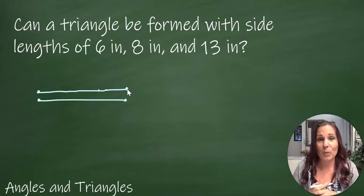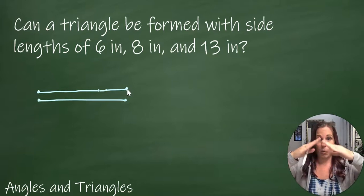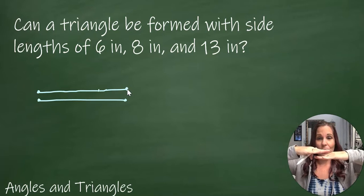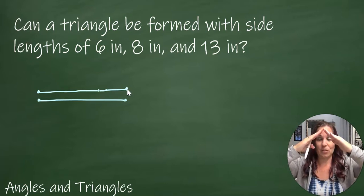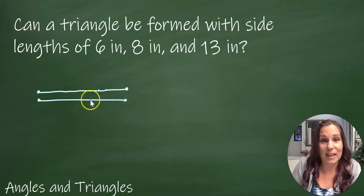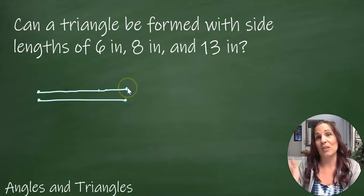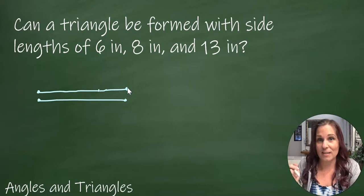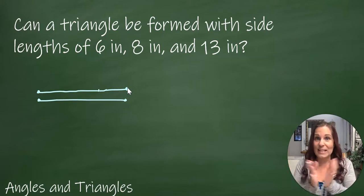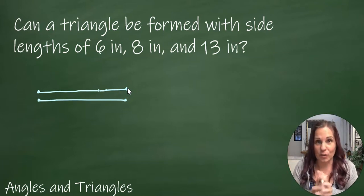So even if the sum of the two smaller sides is equal to the third side, it's still not going to give you a triangle. The only way you're going to be able to actually open it up is if they overlap. So then when you open it up, they'll touch. And the only way that's going to happen is when the two shorter sides added together are longer than the third side.